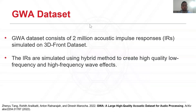We use acoustic impulse responses from the GWA dataset to train our network. IRs in the GWA dataset are created by automatically calibrating the ray energy simulated using the geometric acoustic method with wave effects simulated using a finite difference time domain wave solver to create high-quality, low-frequency, and high-frequency wave effects. The GWA dataset consists of 2 million impulse responses simulated on indoor 3D environments from the 3D-FRONT dataset. We train Mesh2IR on 200,000 impulse responses simulated in 5,000 different indoor environments.